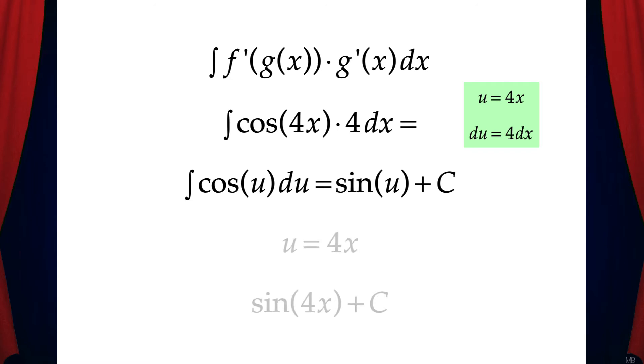But u equals 4x, so we can substitute that back in and we get our final antiderivative, sine 4x plus c. And that's the solution.